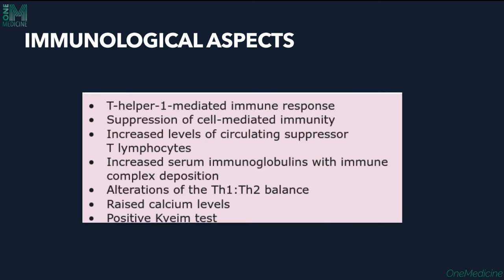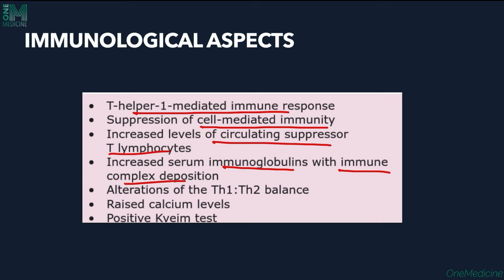Other immunological aspects: sarcoidosis is a helper T-cell mediated response with suppression of cell-mediated immunity, resulting in anergy to tuberculin and candidal antigen tests. There is increased level of circulating suppressor T-cells, increased immunoglobulins with immune complexes, and alteration in TH1/TH2 balance.